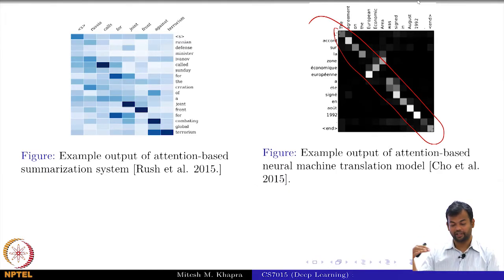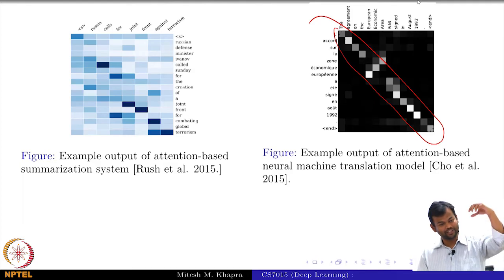In the particular case on the figure on the right hand side, the one that clearly shows that for a monotonic kind of translation scenario between English and French, most of the attention weights are along the diagonal and that is exactly what you would expect, right? That is where we ended.